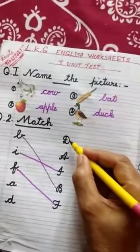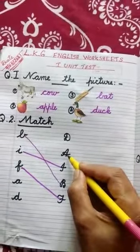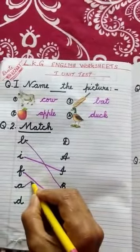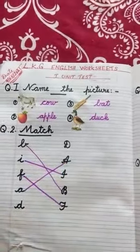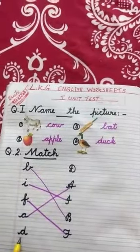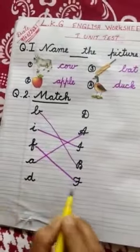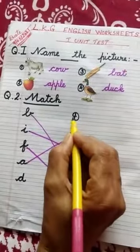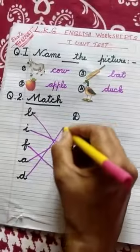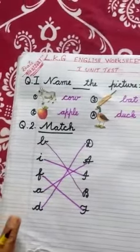Then next letter: small A — where is capital A, children? This is capital letter A. Then draw a line from small letter to capital letter. Then next letter D — cursive small letter D. Where is cursive capital letter D? Yes, this is cursive capital letter D. Draw a line and match it. Finish.